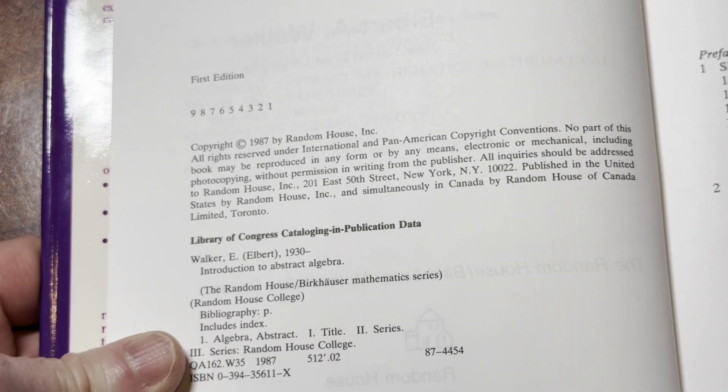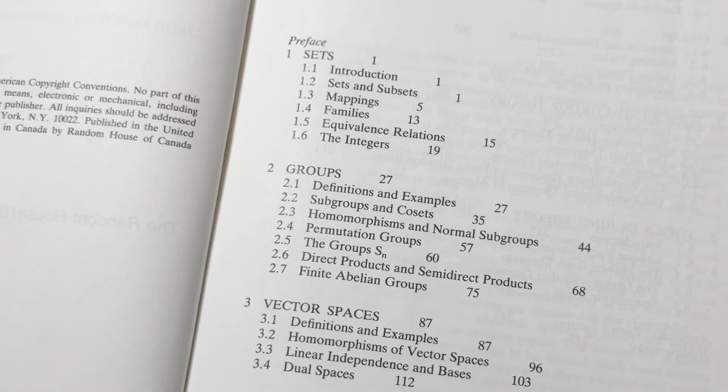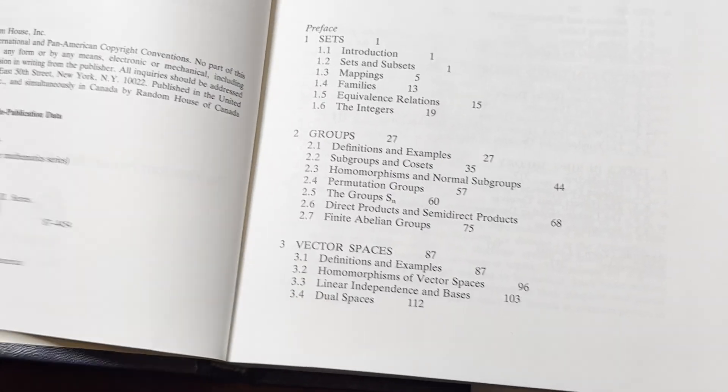So this is a first edition book. Really nice. Sets. That's the first topic that we see. Groups. Vector spaces. Really good stuff. Introductory stuff.